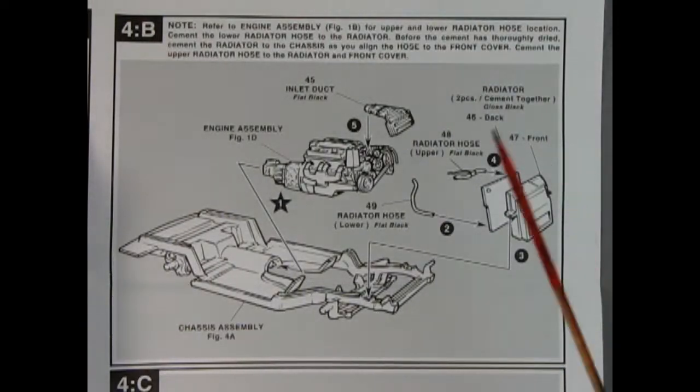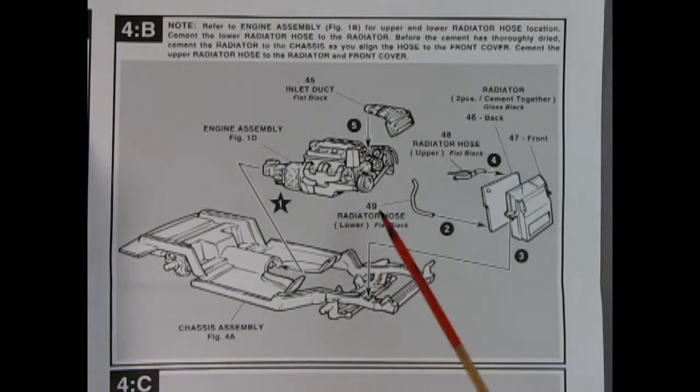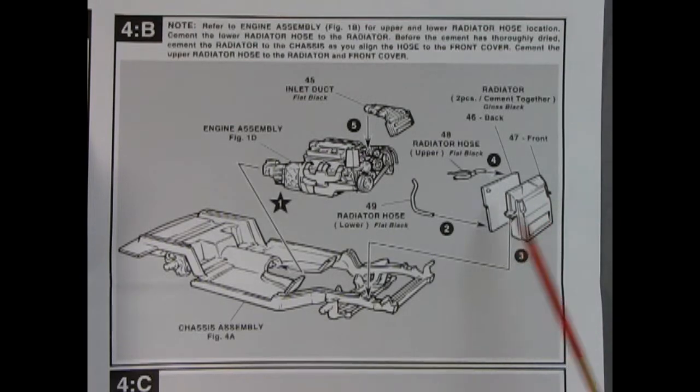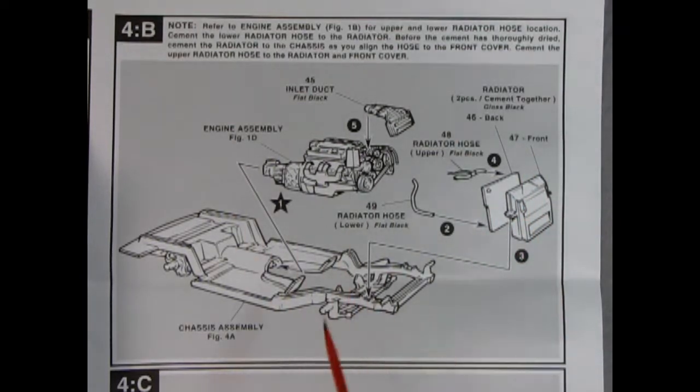In panel 4 we can see our engine being dropped into the chassis assembly. And then there's those radiator hoses. Remember what it showed before on the front timing cover. And we have our upper and lower and our two-piece radiator. And all this goes right on that chassis.